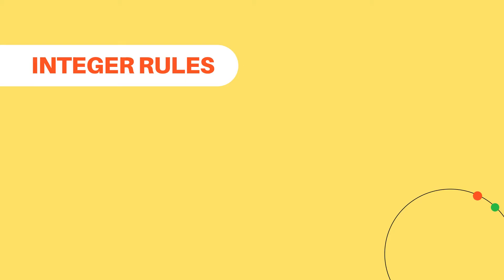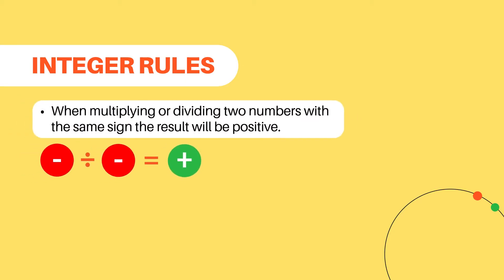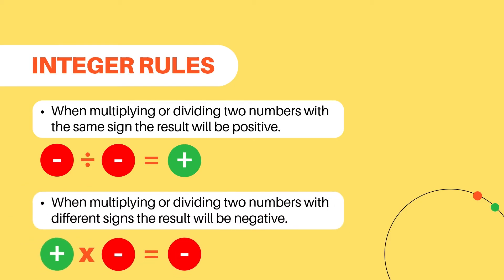The rules for multiplying and dividing integers are: when multiplying or dividing two numbers with the same sign — for example, a negative number divided by another negative number — the result will be positive. When multiplying or dividing two numbers with different signs — for example, a positive number multiplied by a negative number — the result is going to be negative.